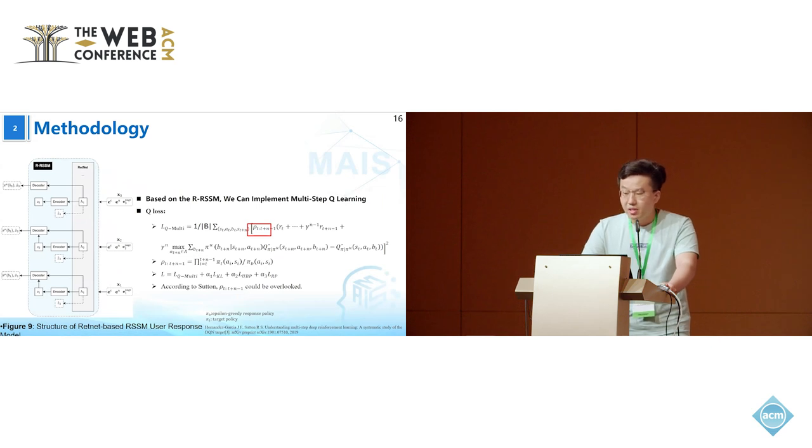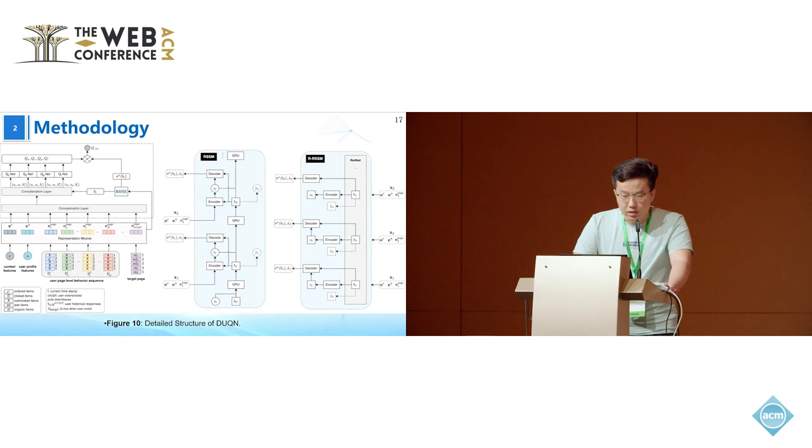Lastly, employing multi-step Q-learning, DoQN efficiently bootstraps reward information over multiple steps, refining the ad auction process. Here, rho is used for importance sampling to correct the bias in the expected Q-value during multi-step updates. According to Sutton's paper, omitting this correction does not affect the performance unless it is overlooked.